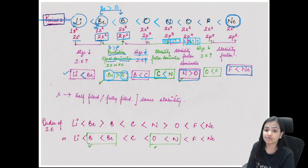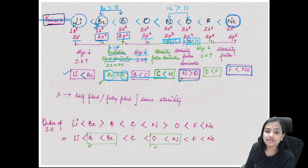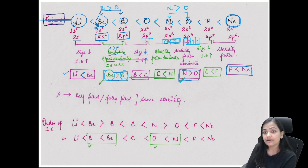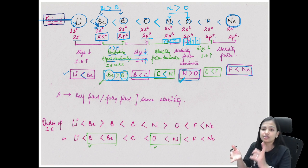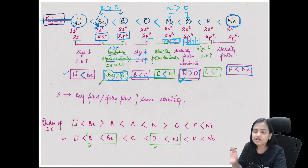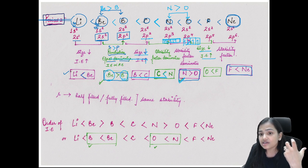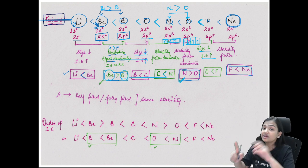Comparing nitrogen (2p³) and oxygen (2p⁴): nitrogen has the half-filled stable configuration while oxygen's fourth electron in the same p subshell undergoes electron-electron repulsion, making it easier to remove. So ionization energy of nitrogen is greater than that of oxygen. This is another important irregularity - less energy is required to remove an electron from oxygen than from nitrogen.